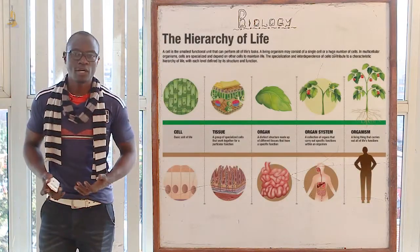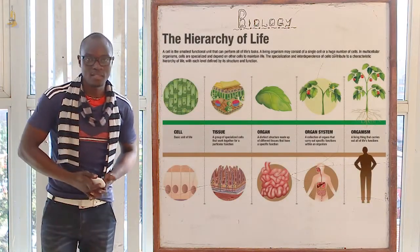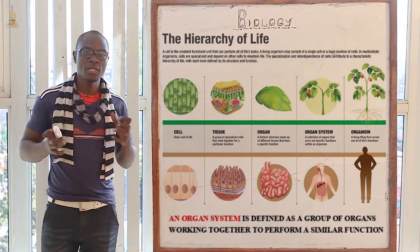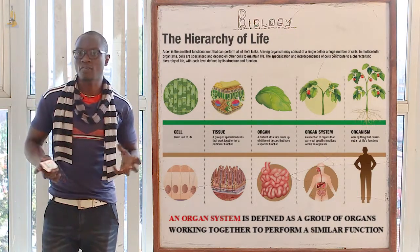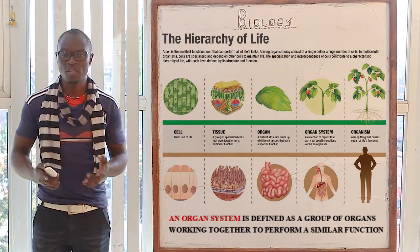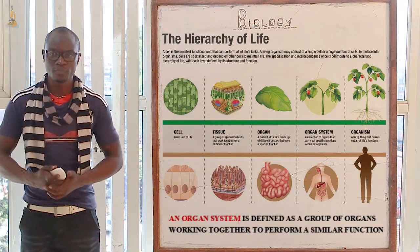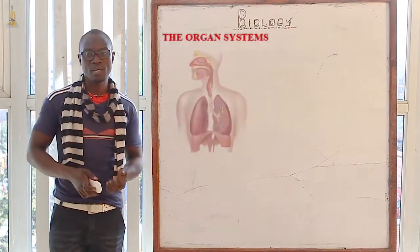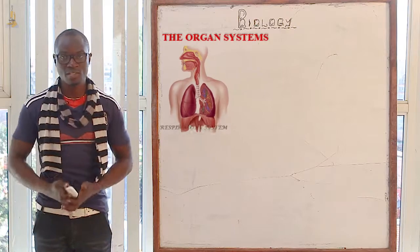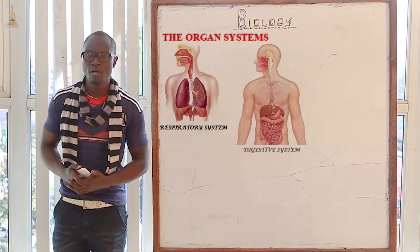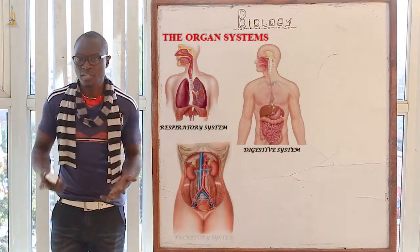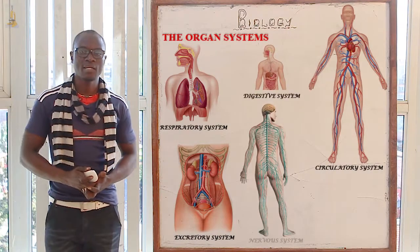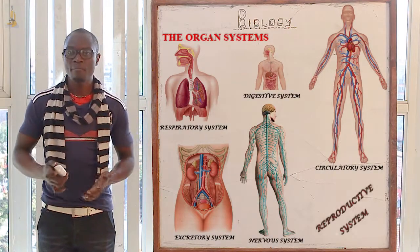Finally, let's look at the organ system. An organ system is a group of different organs that have come together to perform a specific function. The different types of organ systems we have include the respiratory system, the digestive system, the excretory system, the circulatory system, and the nervous system for impulse transmission and response.